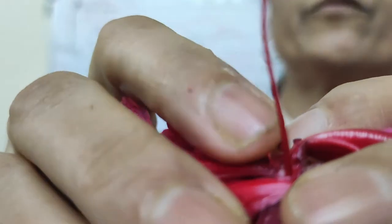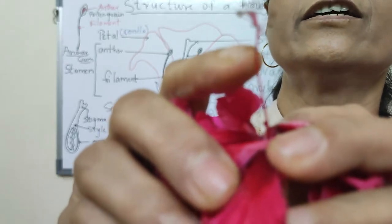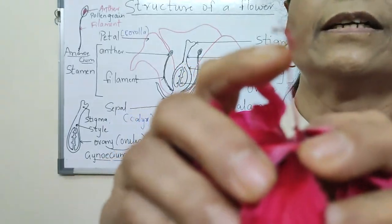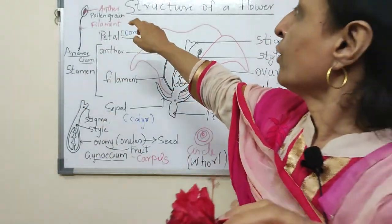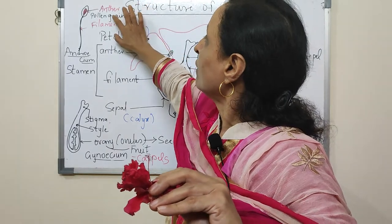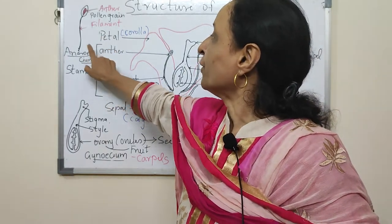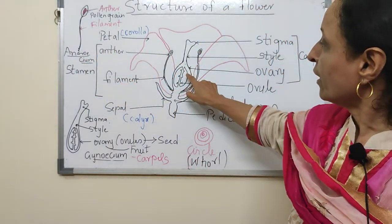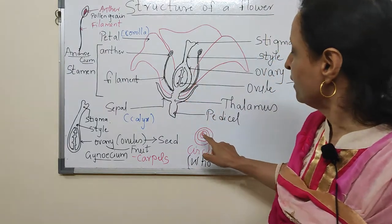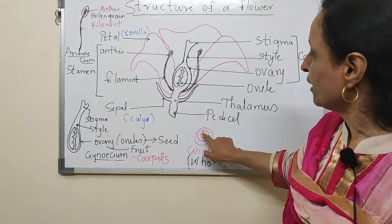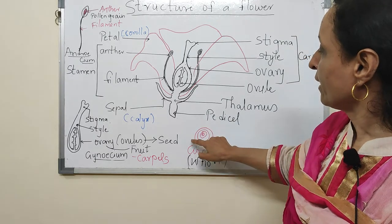In the androecium, this is the slender stalk which is filamentous — and this is the androecium. Here you can see the anther on which you find the pollen grains, and this is the filament. This is the androecium — the male reproductive structure. The innermost whorl is gynoecium, next to it is the androecium, then corolla, then calyx — these are the four whorls.